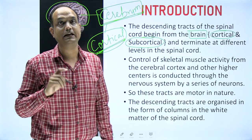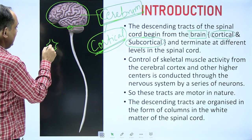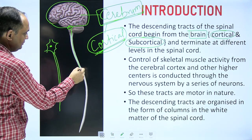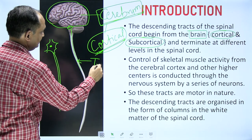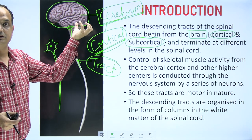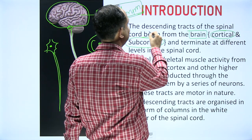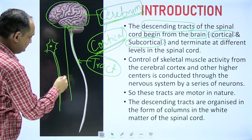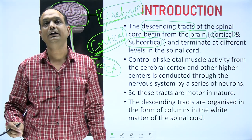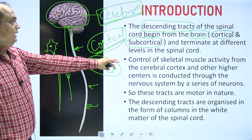Multipolar neurons are present in the cerebral cortex and other parts of the brain, and these give rise to axons. These axons enter the spinal cord and form a tract. A tract is a group of nerve fibers having a common source of origin, following a common pathway to terminate at one point of the spinal cord. Descending tracts go downward inside the spinal cord — they start from the brain, from cortical and subcortical areas, and terminate at various levels of the spinal cord.